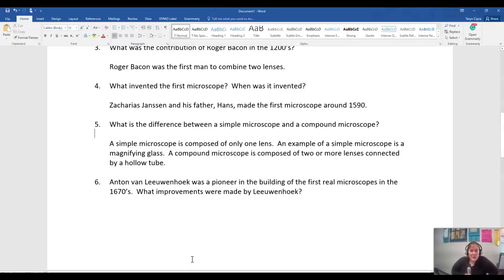What's the difference between a simple microscope versus a compound microscope? Simple means it's composed of just one lens, like a magnifying glass or a monocle. A compound microscope is composed of two or more lenses connected by a hollow tube, like a telescope or a compound light microscope.